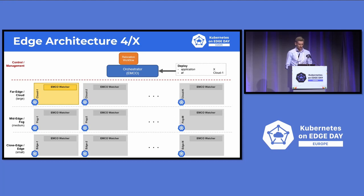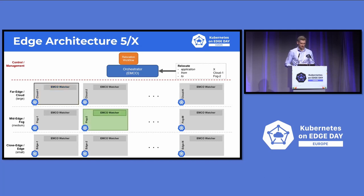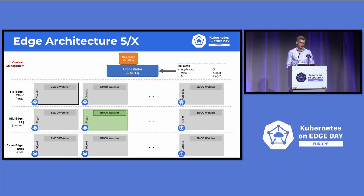Rather than showing a live demo due to time constraints, I'll show it in an abstracted way on the slides. Imagine we tell the EMCO APIs we want to deploy application X on cloud one — it's deployed. Then we send a second request to the EMCO APIs with the relocation intent to relocate application X to, for example, FOG 2. Following the procedure described, the application will be relocated from cloud one to FOG 2, with an almost seamless migration. The traffic steering part is still work in progress — we have a simple solution, but there is a lot more to do.